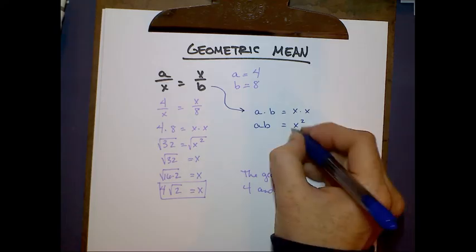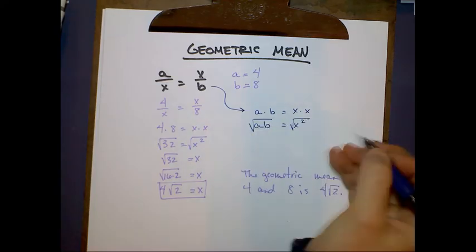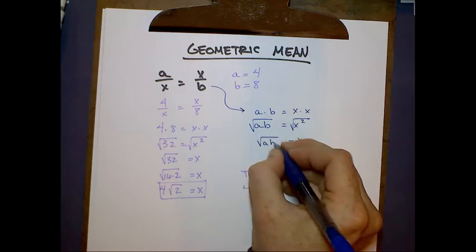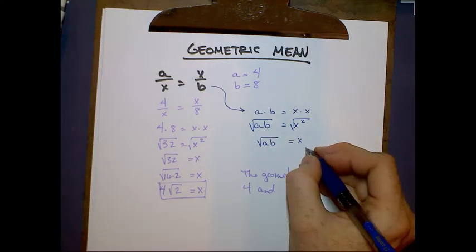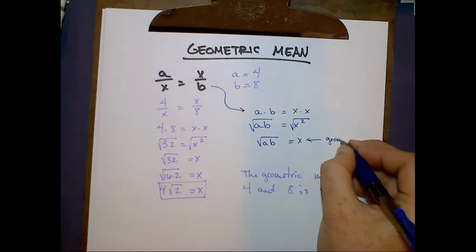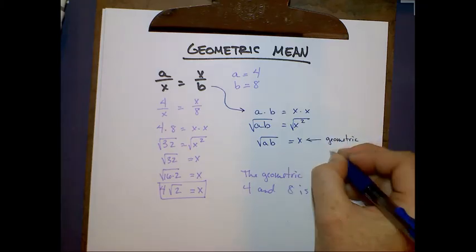And then, to isolate x, we take the square root of both sides and we get x equals the square root of ab. In other words, the geometric mean of any two numbers is the square root of their product.